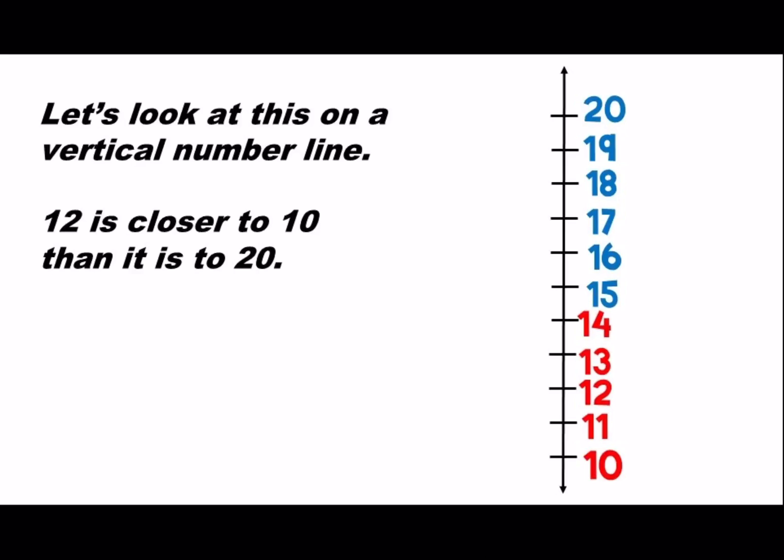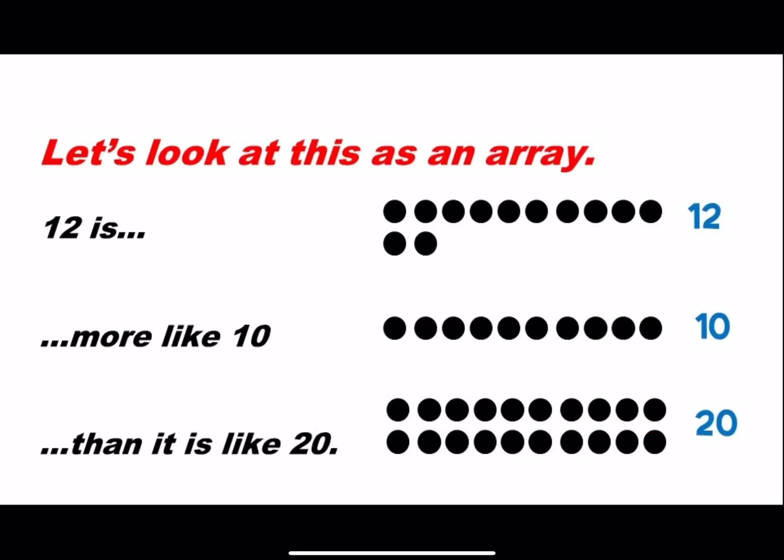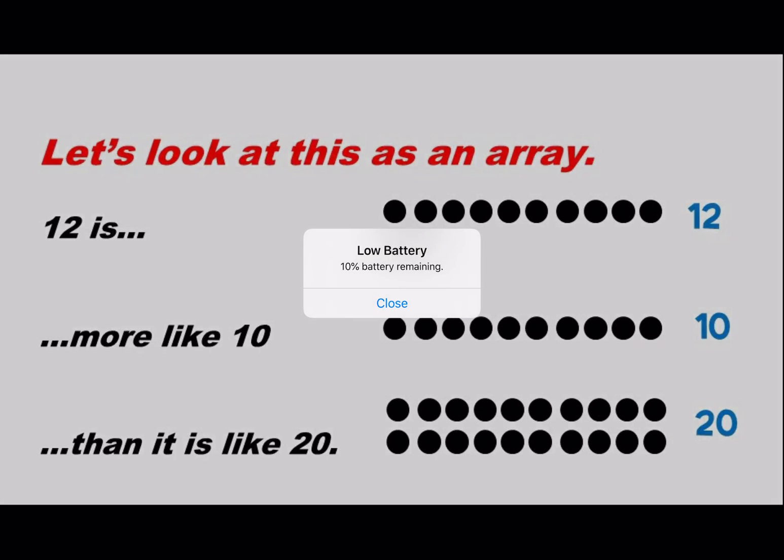Let's look at this on a vertical number line. Notice that 12 is closer to 10 than it is to 20. Let's look at this as an array. 12 is more like 10 than it is like 20.